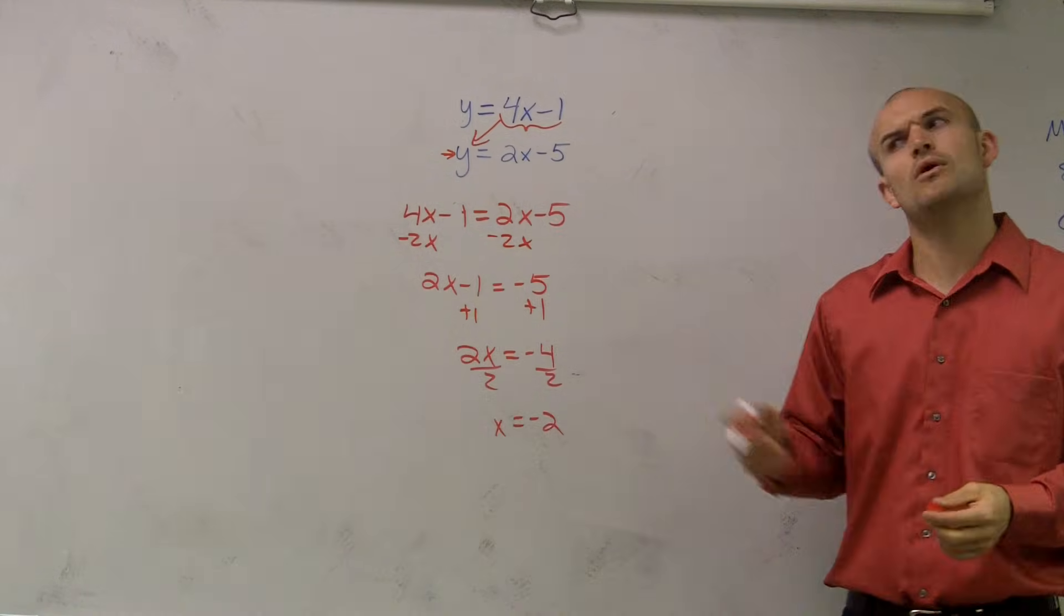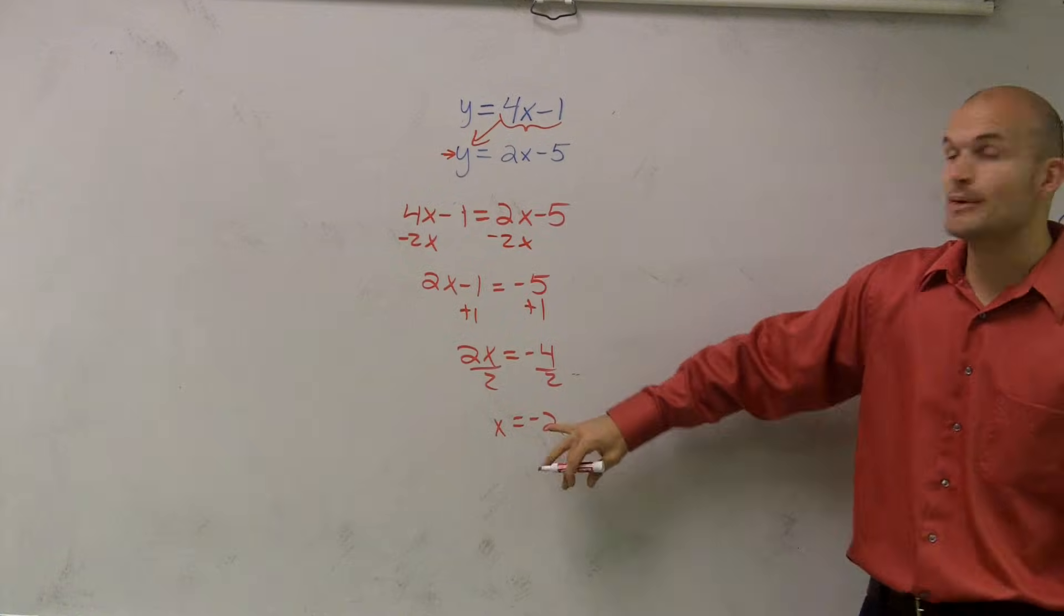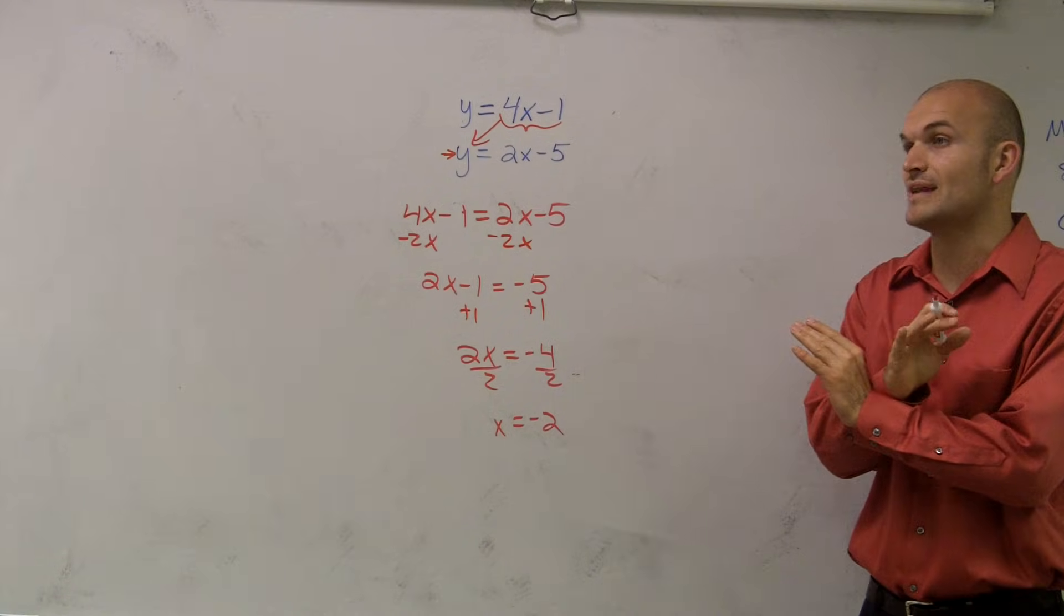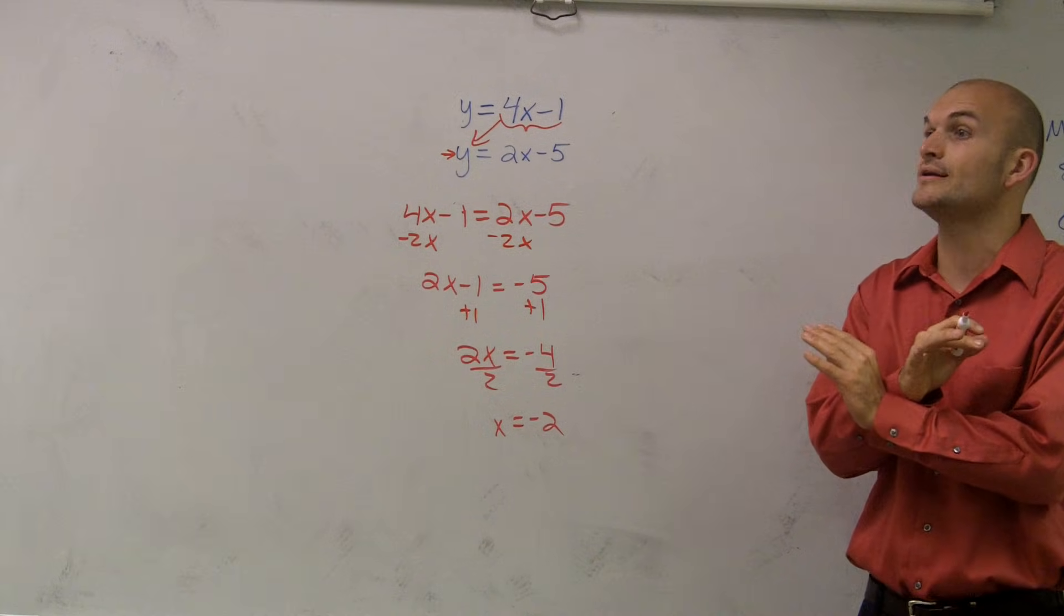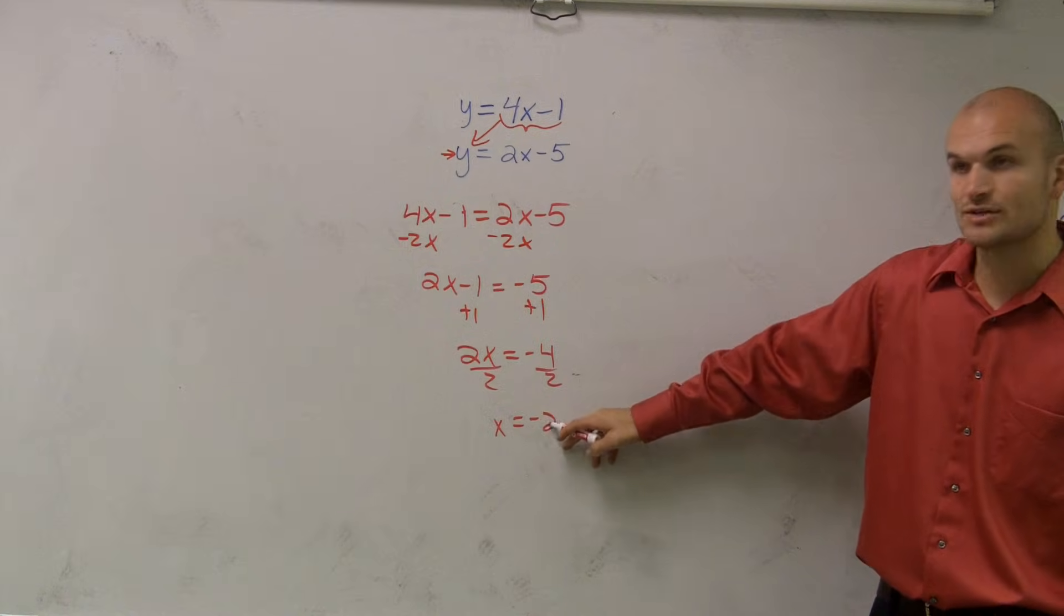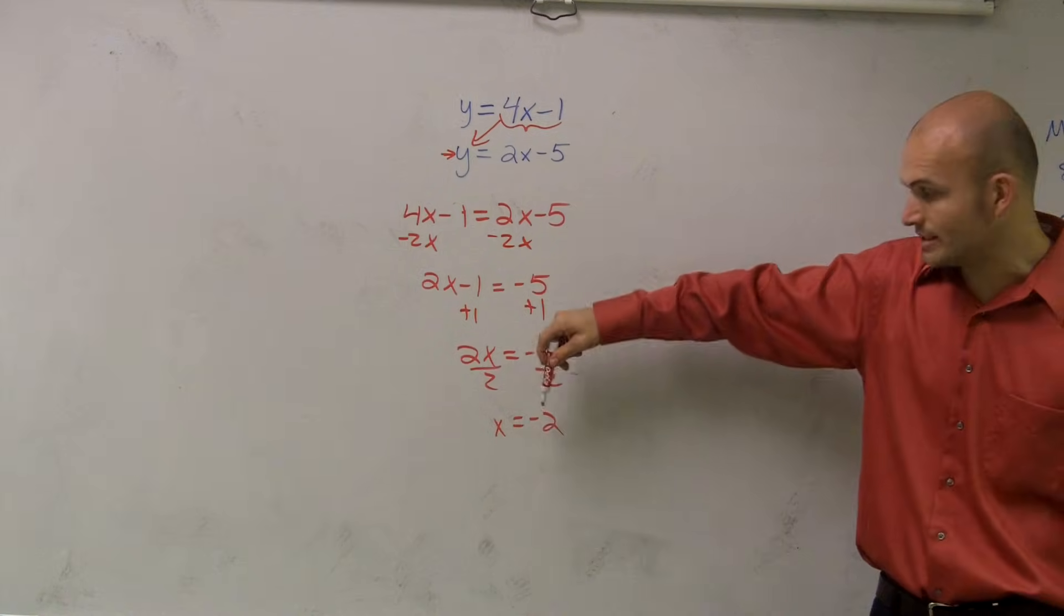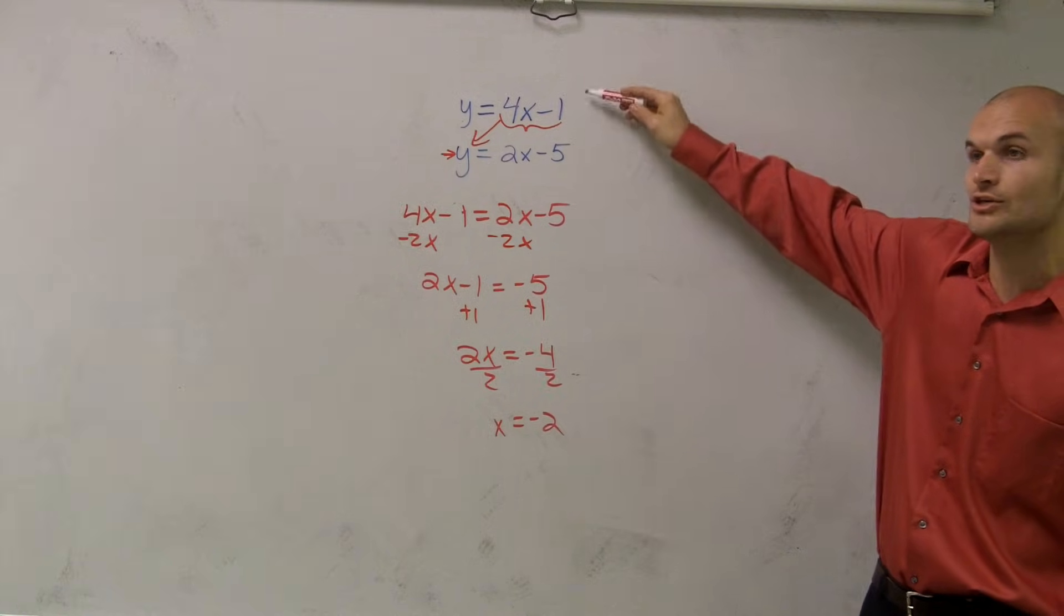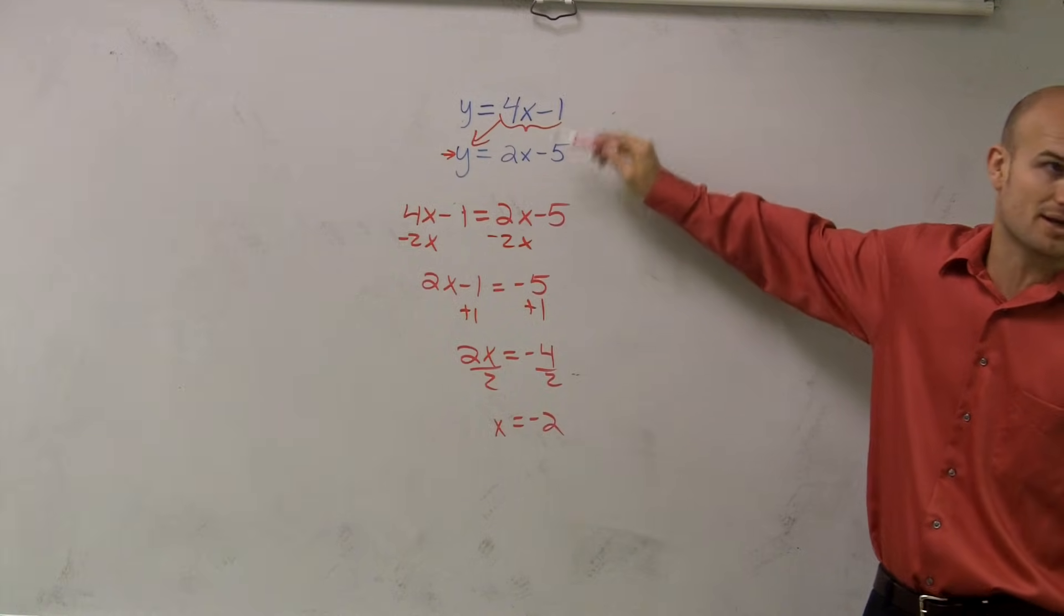If you guys remember, x equals negative 2. But remember when we were graphing, we didn't have just an x coordinate, right? We had an x and a y coordinate. So we need to figure out what our y value is. So now that x equals negative 2, I'm going to substitute in negative 2 for my value of x. Now it does not matter which x I plug it into.